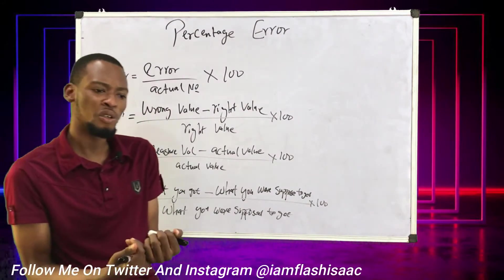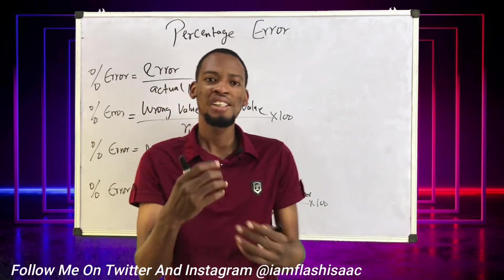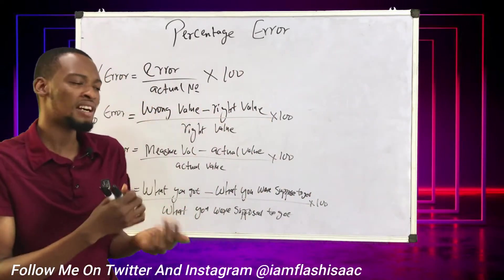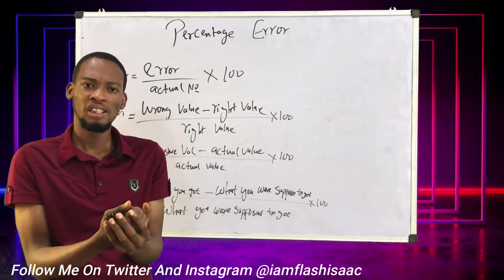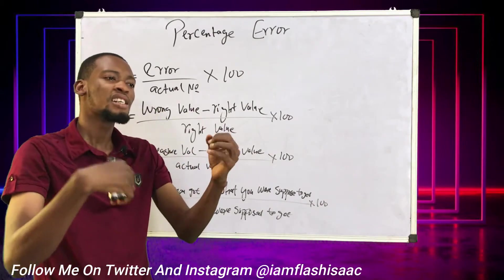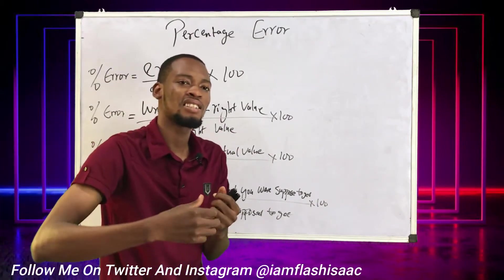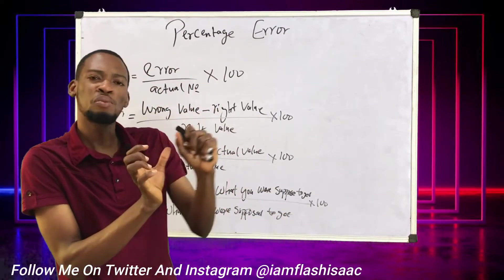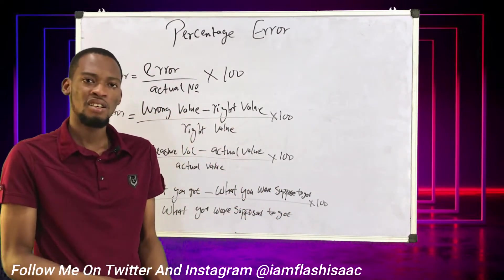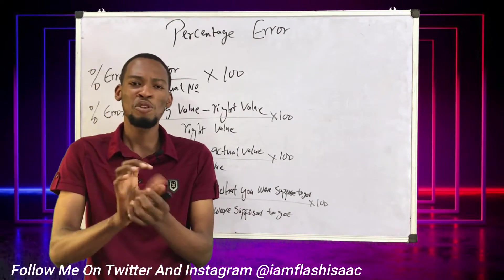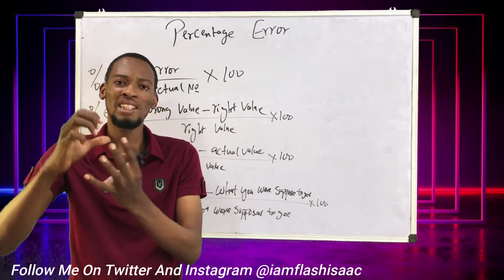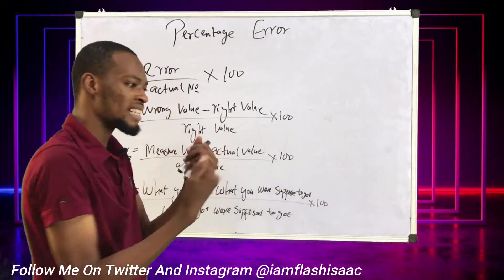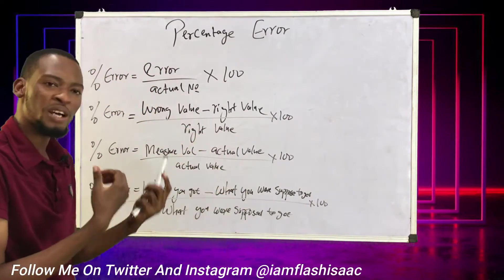For you to make an error, or for me to say you are wrong, it means there is something right. If I said we have 10 cups of rice at home and you say that's wrong, it means there is a correct answer — it is more or it's less. So for there to be error, there must be a right answer, there must be a real value.